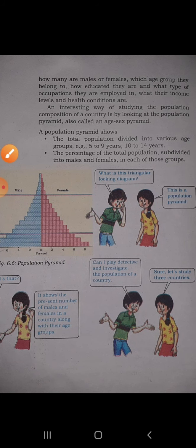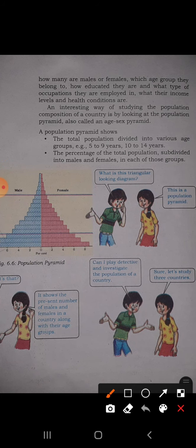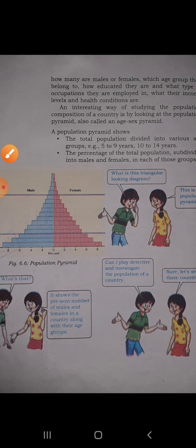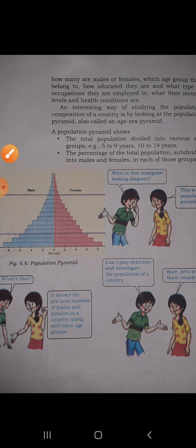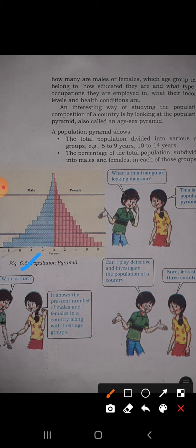Population composition is best indicated through the population pyramid. How do we study population composition? By looking at the population pyramid. Looking at figure 6.6, this pyramid divides the population into two forms — the blue one represents males and the red one represents females.